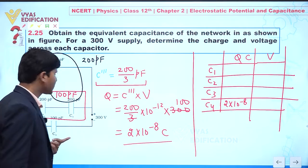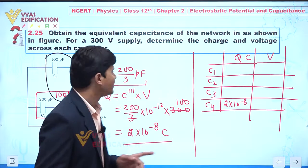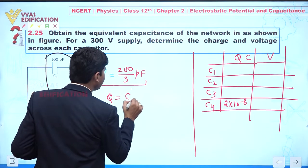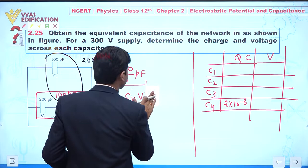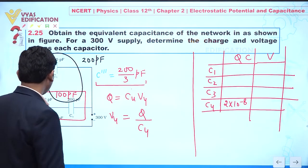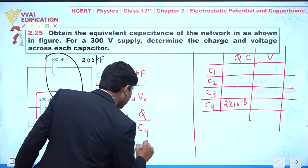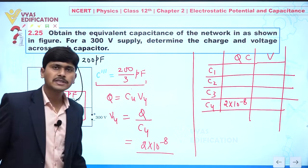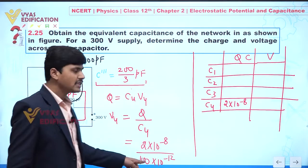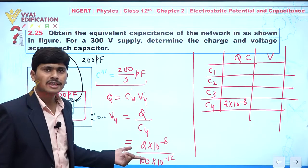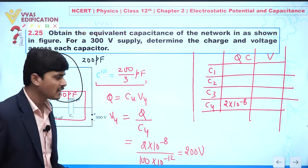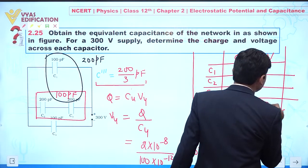Knowing the charge on C4, we can find the potential difference across it. V4 = Q / C4 = (2 × 10⁻⁸) / (100 × 10⁻¹²) = 2 × 10⁻⁸ × 10¹⁰ / 100, which gives V4 = 200 volts. So the potential difference across capacitor C4 is 200 volts.